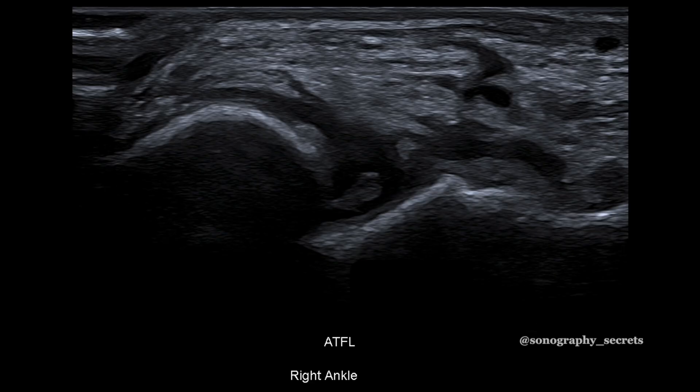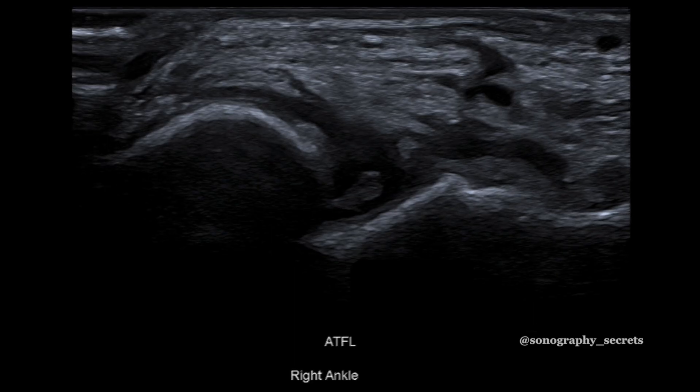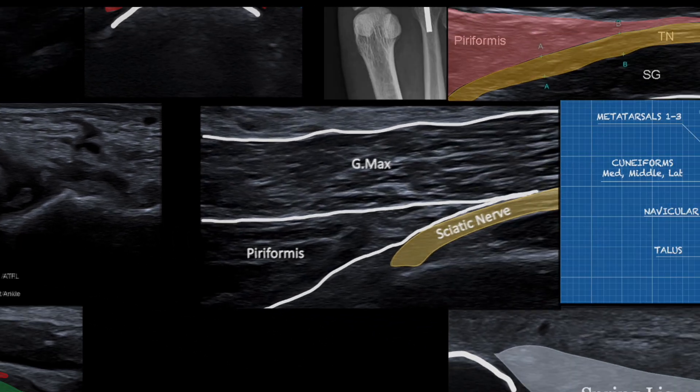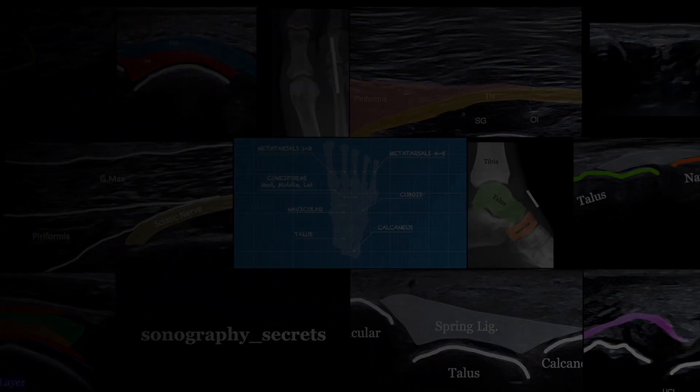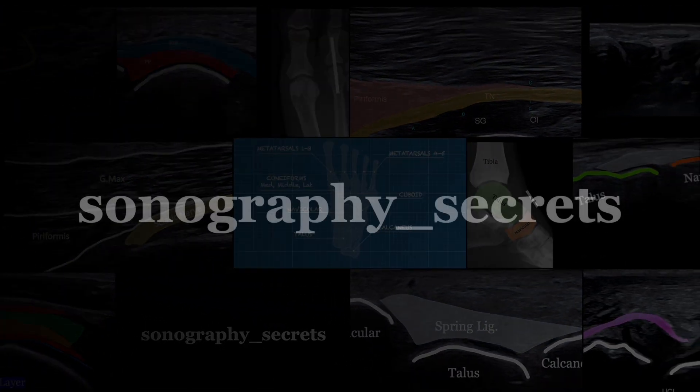Whereas in a complete tear, we have a discontiguous ligament or a defined gap between tendon ends. So when describing ligament injuries on ultrasound — be it the ATFL or any other — use partial tear or complete tear. Thanks for watching, like and subscribe for more.